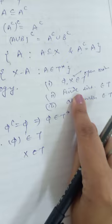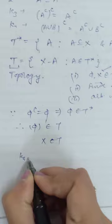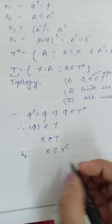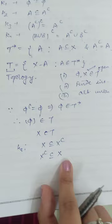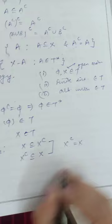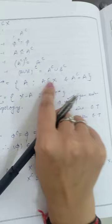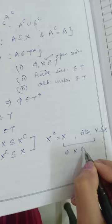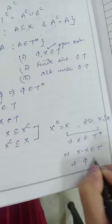By K2, every set is a subset of its Kuratowski, so X must be a subset of X-Kuratowski. But since X is the universal set and hence the superset of all sets, X-Kuratowski must also be a subset of X. From these two inclusions, X-Kuratowski equals X, so X belongs to T*. Therefore the complement of X, which is φ, belongs to T. Hence both φ and X belong to T, and the first open axiom is satisfied.